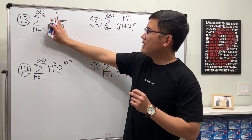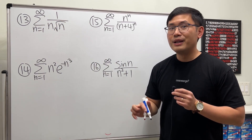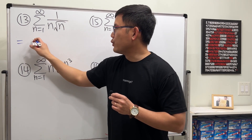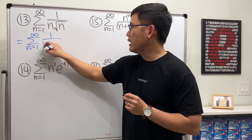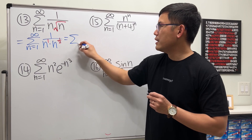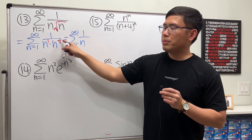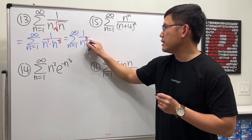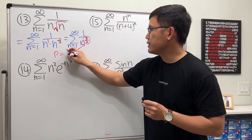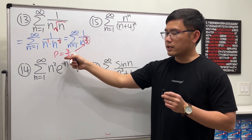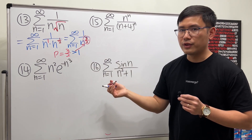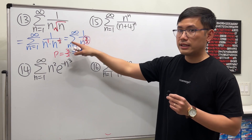Number thirteen: the series of 1/(n · √n). Rather than making a comparison, simply multiply the exponents: n¹ · n^(1/2) = n^(3/2). So this is the series of 1/n^(3/2), a p-series with p = 3/2. Since p > 1, the series converges. Make sure you state that p > 1 to justify the conclusion.